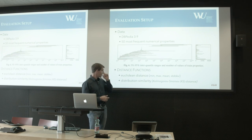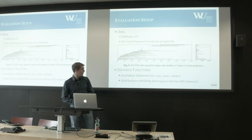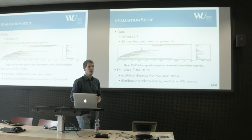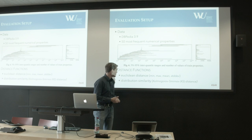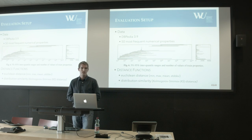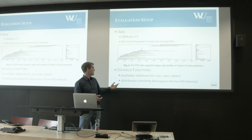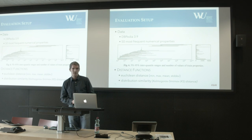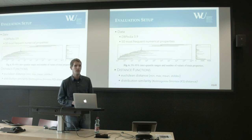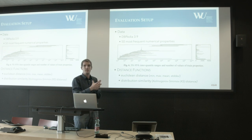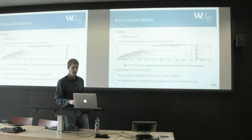As distance functions, we applied Euclidean distance over min, max, and standard deviation. The other one, used by Heiko Paulheim in a paper for outlier detection, was a distribution similarity using the Kolmogorov-Smirnov distance function — you get a value of one if the distributions are the same, and null if they are not overlapping.